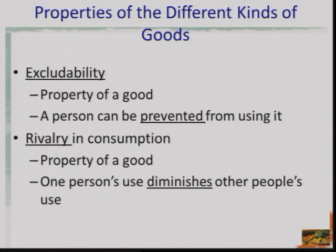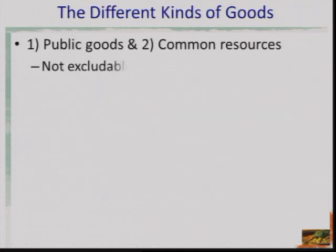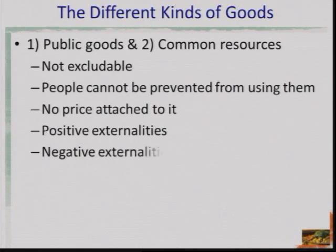Both public goods and common resources are not excludable, meaning we can't prevent someone from using them. We also have to be careful because there can be positive and negative externalities associated with each one of these things.